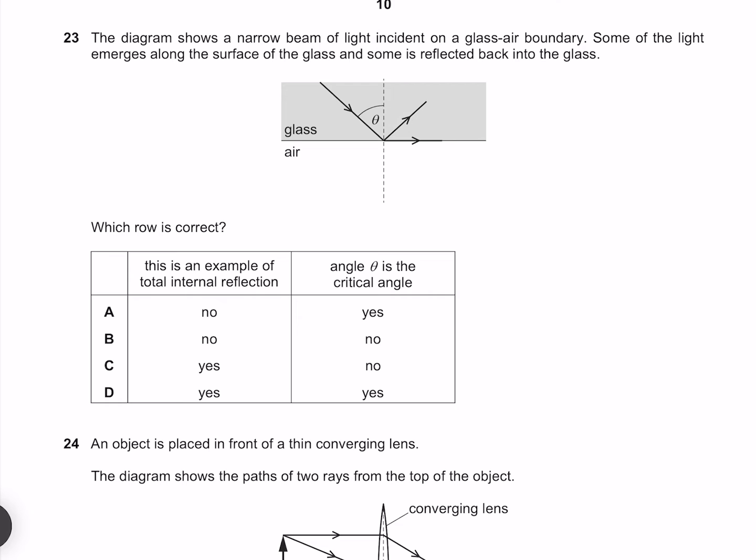The diagram shows a narrow beam of light incident on a glass-air boundary. Some of the light emerges along the surface of the glass, and some is reflected back into the glass. Which row is correct? This is not an example of total internal reflection because we still have our refracted ray. But we know we're at the critical angle because the ray is going along the boundary. So our answer is A.